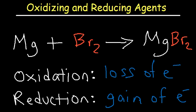In this video, we're going to focus on identifying oxidizing and reducing agents. What you need to know is that oxidation involves a loss of electrons, and reduction involves a gain of electrons. If the oxidation number increases, oxidation has occurred. If the oxidation number decreases, reduction has occurred.